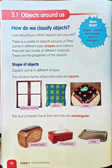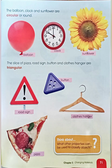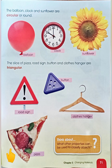Look at this example — the balloon, clock, and sunflower are circular or round. Next, the slice of pizza, road sign, button, and clothes hanger are triangular.